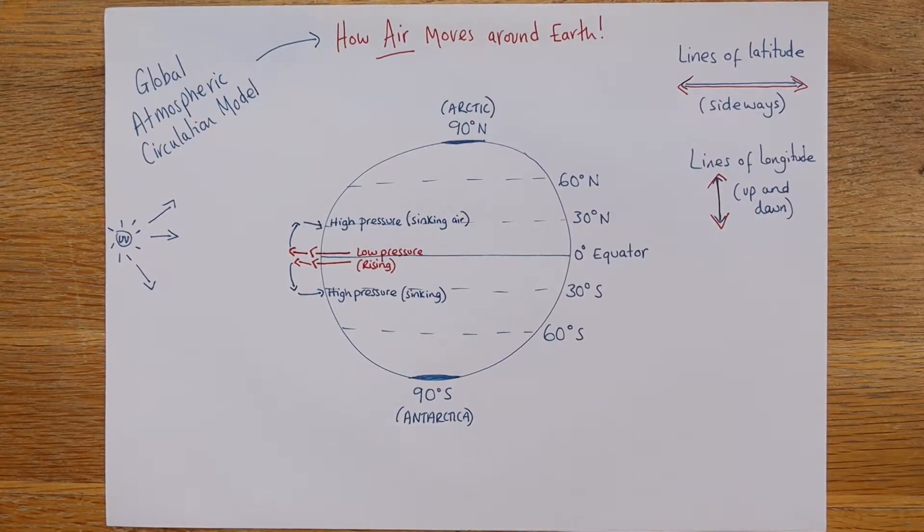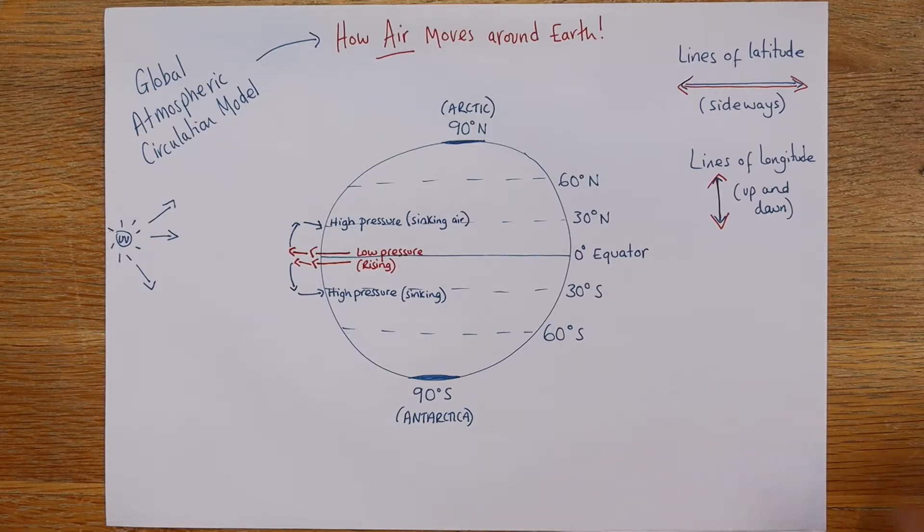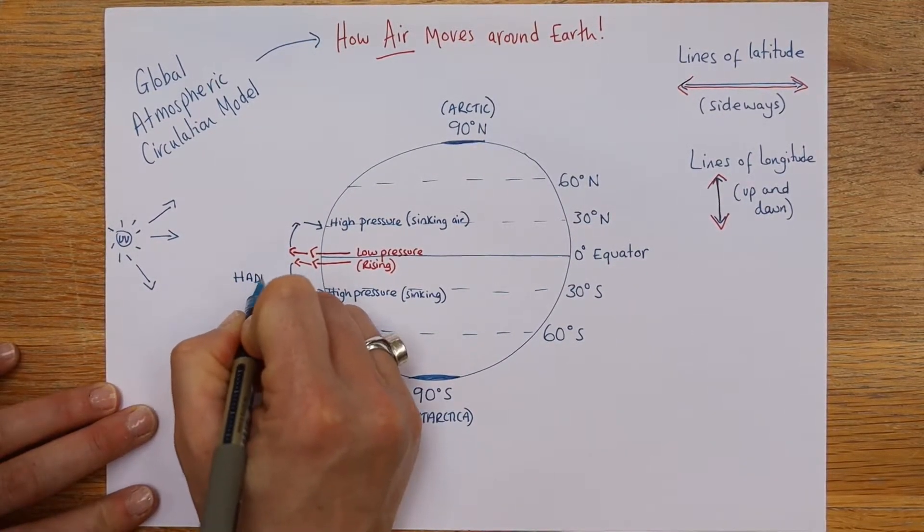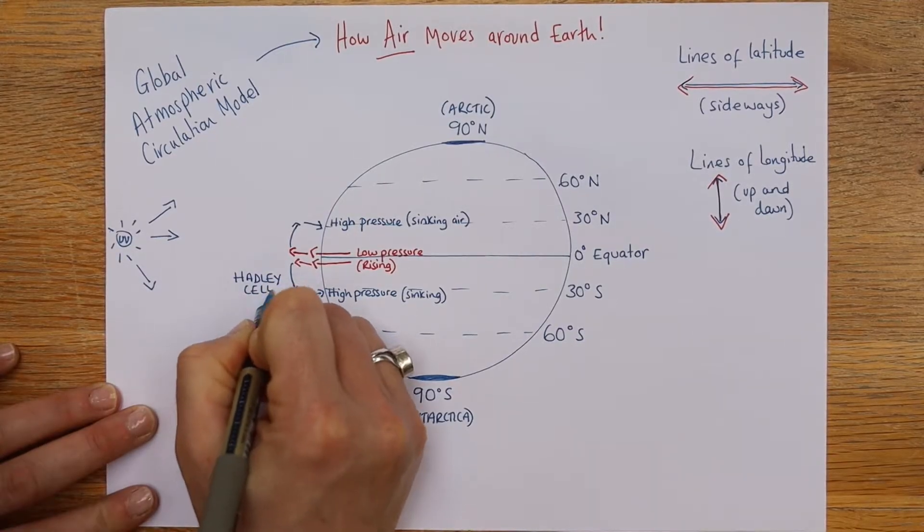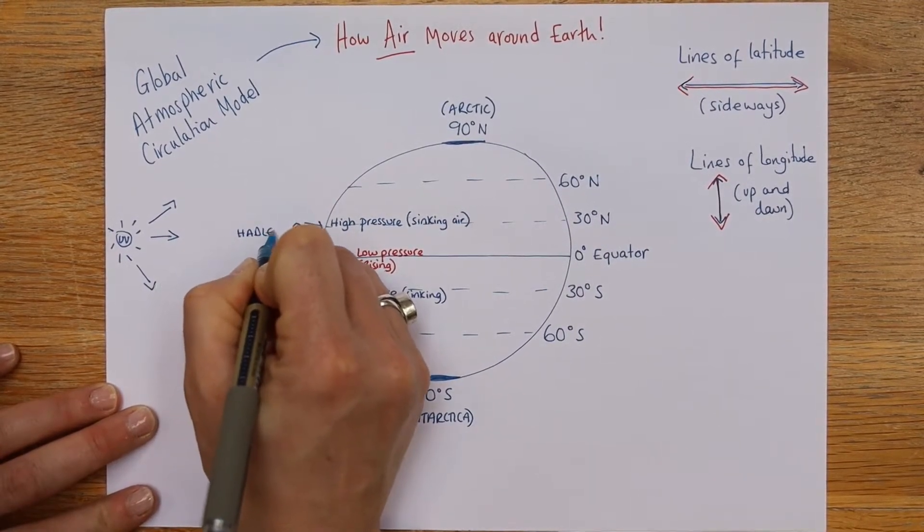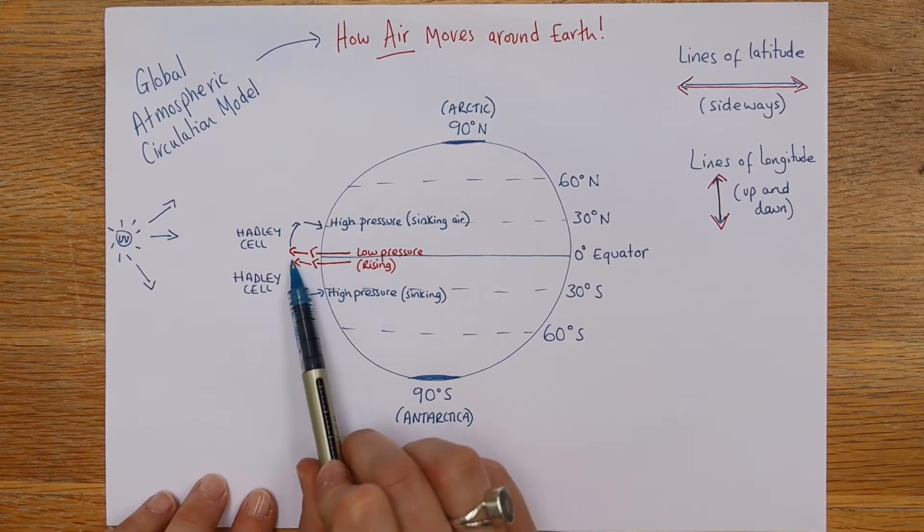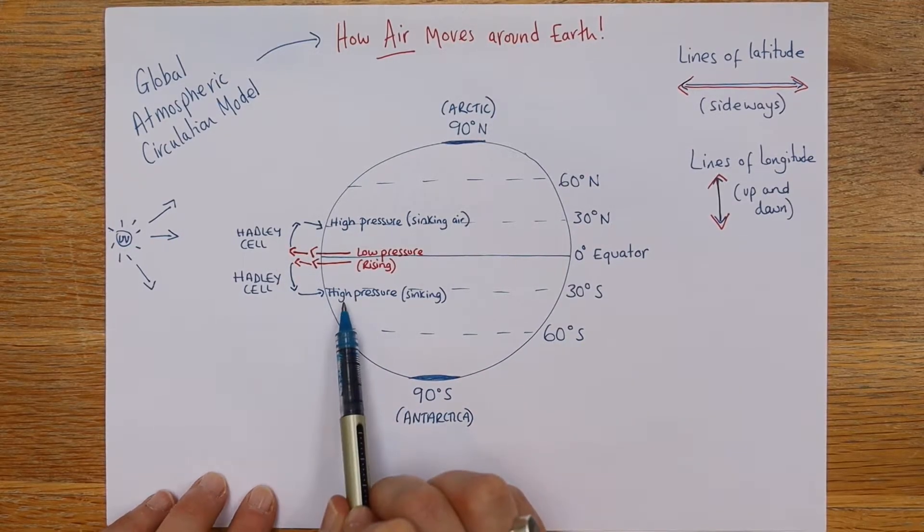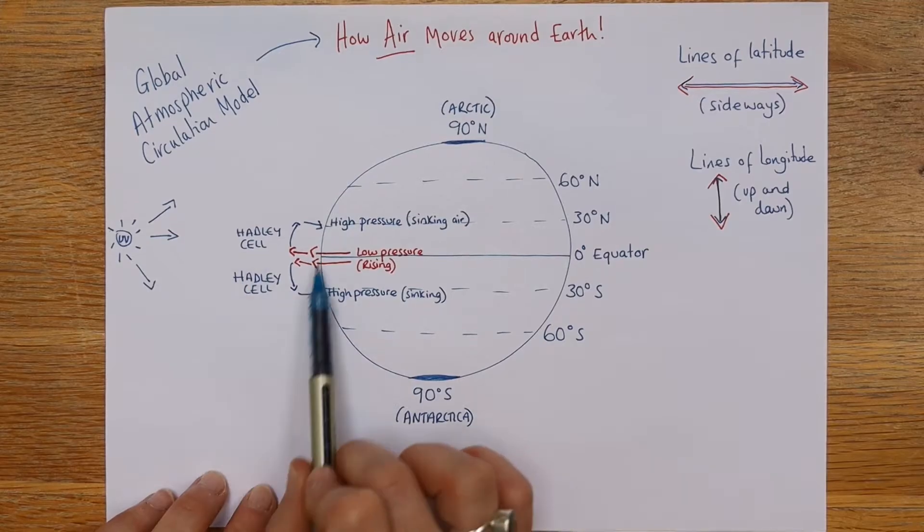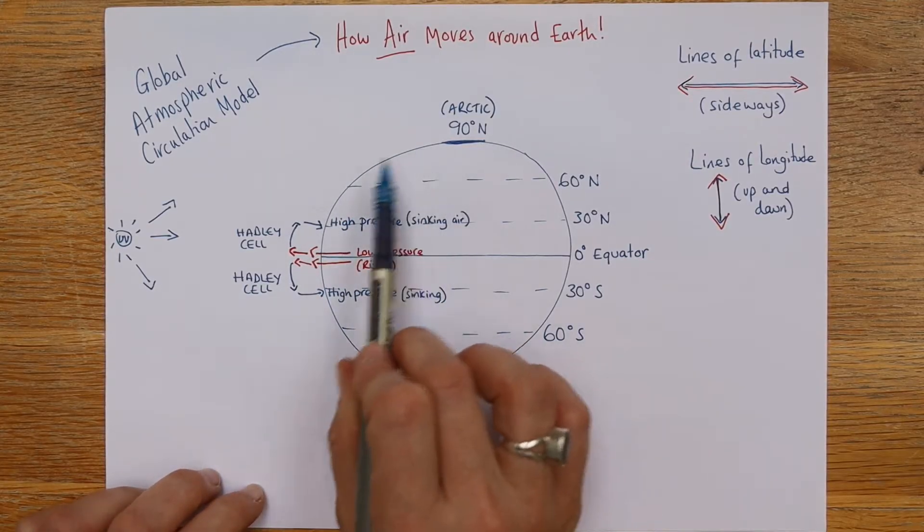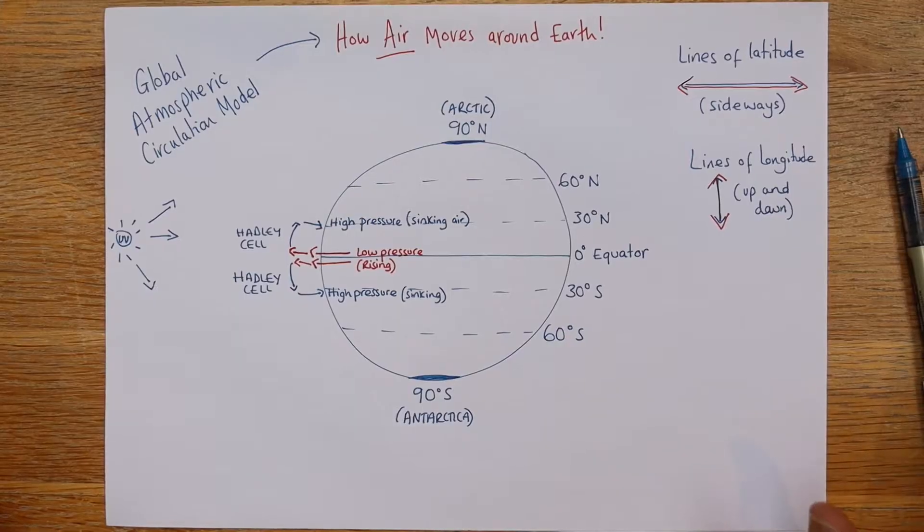Now, those two sections that we've just drawn there have got names. And they've got the same name, which makes life quite easy, actually. And they are called the Hadley cells. And they are either side of the equator. And hopefully, just looking at the colours of the lines there and what's happening with the air rising and falling, or low pressure and then high pressure, that helps you understand what's going on in those two cells. Now, we've got to add our next two cells and then the final two. So, we've got four more to go, but actually only two different names.